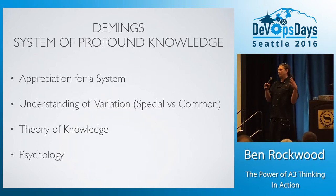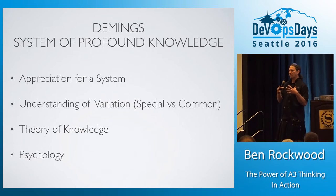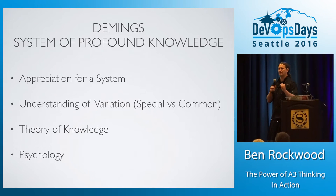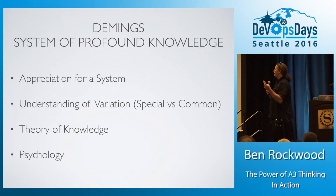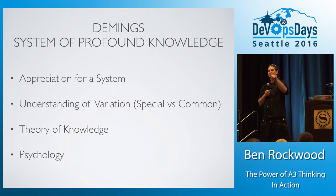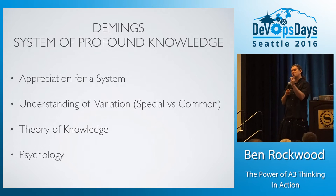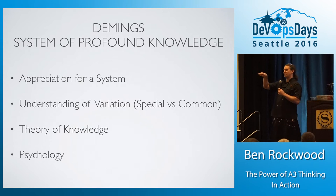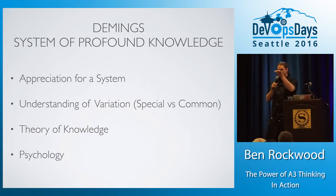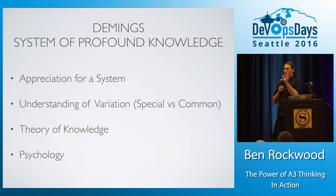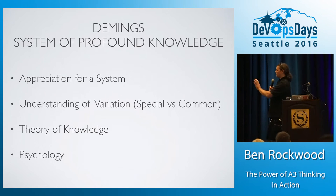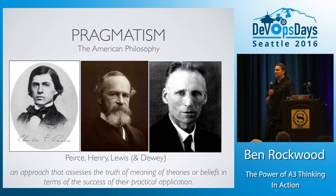Deming brought together a great framework called the System of Profound Knowledge, and it has four components. Appreciation of a system — we always think in systems. An understanding of variation — incredibly important. There are two types: common cause variation, which is the normal up-and-down you see all day long, and special cause variation — that big spike that makes you say 'what was that?' — that's the one you want to focus on. Then there's the theory of knowledge, and psychology, because ultimately all these systems are composed of people.